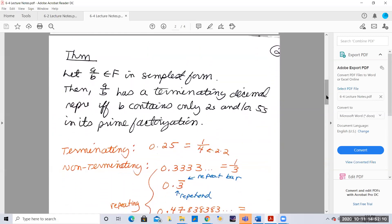Now there's a really important theorem. If a over b is a fraction in simplest form, then a over b has a terminating decimal representation if and only if the denominator b contains only twos and or fives in its prime factorization.